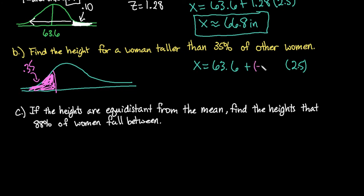So I would put in a negative 0.39 as my z-score and then I would again just plug that into my calculator so we end up with x is approximately 62.6 inches. So this one is below the mean because of the fact that 35 percent of women would be less than 50 percent which would put us at a z-score of 0.